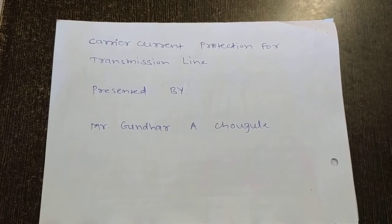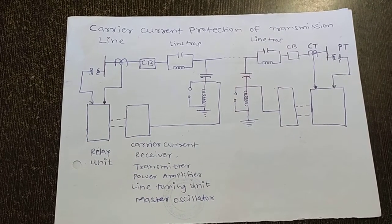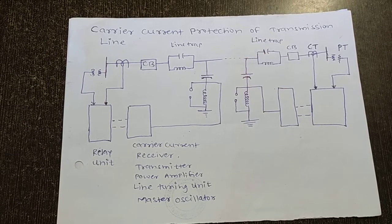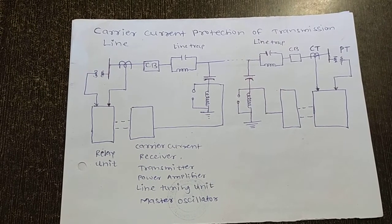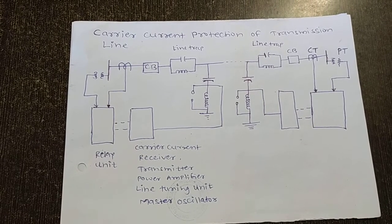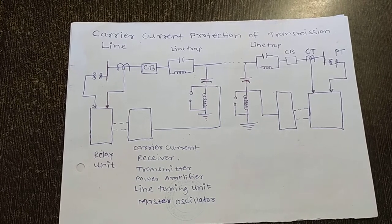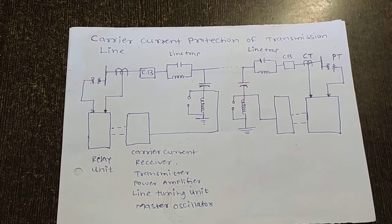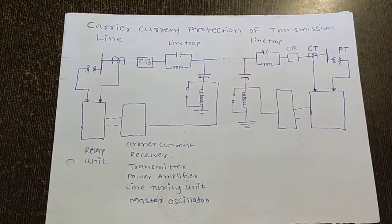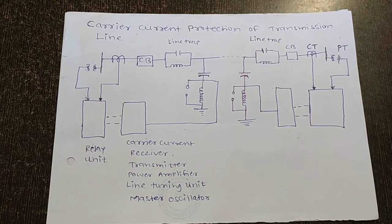This is the carrier current protection of the transmission line. At each end of the transmission line, identical carrier current equipment is provided, consisting of a transmitter, receiver, line tuning unit, master oscillator, amplifier, and other elements. Let us discuss the different elements present in the carrier current equipment.